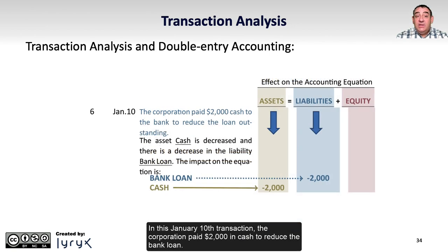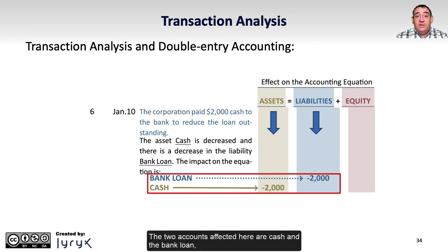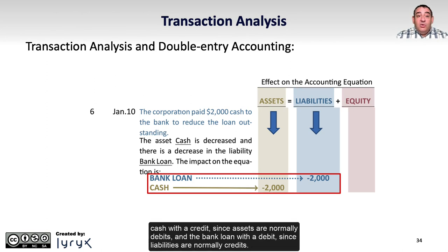In the January 10th transaction, the corporation paid $2,000 in cash to reduce the bank loan. The two accounts affected are cash and the bank loan, both going down by $2,000. Cash receives a credit since assets are normally debits, and the bank loan receives a debit since liabilities are normally credits.